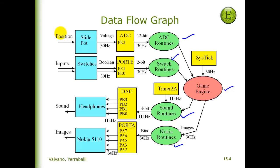The slide pot gives us a position — a resistance — converted into a voltage at 30 Hz. This 0 to 3 volt signal is converted to a 12-bit number representing the position on the slide pot. In the data flow graph, arrows represent the passage of information: voltage moves from the slide pot to the ADC, then to the driver, then to the game engine — passing 12 bits 30 times a second.